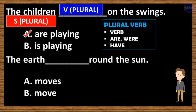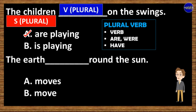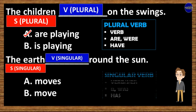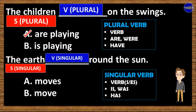What about this sentence? The earth ___ round the sun. A, moves, and B, move. Well, the subject of the sentence is 'the earth,' and it's singular. So, to answer this, we have to use singular verb too.